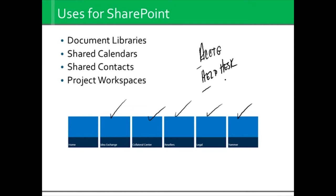We can have elements like a document library. Think of a document library as literally a folder full of documents, but what's different is a regular folder is just a list. When you use a document library, you have a full search — even the contents of the files — and you can search by a variety of attributes. You've also got shared calendars, contacts, and project workspaces. The whole point of SharePoint is to share information and be able to collaborate on it.